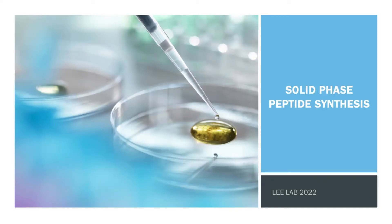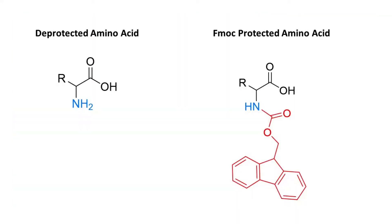Welcome to the solid phase peptide synthesis series made by Dr. Naomi Lee's research group at Northern Arizona University. In this video, we will be discussing how to conduct a ninhydrin test and how to interpret the results. A ninhydrin test, otherwise known as a Kaiser test, is a reaction we perform to verify if our deprotection and coupling reactions are successful. The premise of this test is to determine the presence or absence of free amines, which we can interpret through the color of the solution and resin at the end of the experiment.